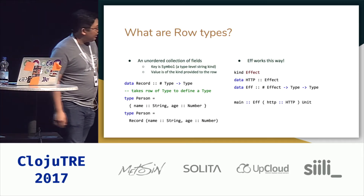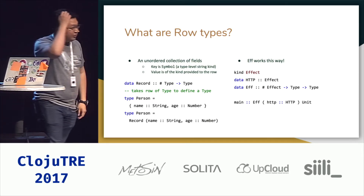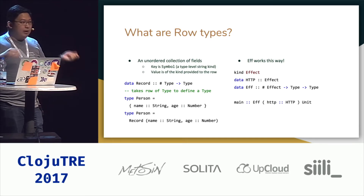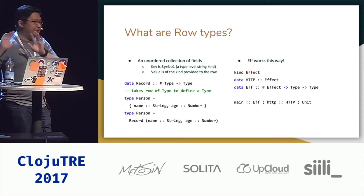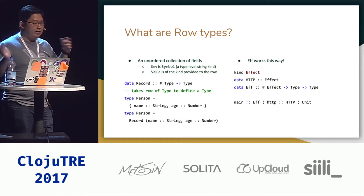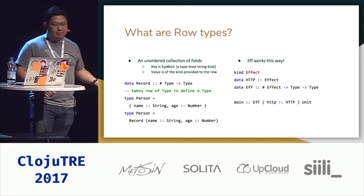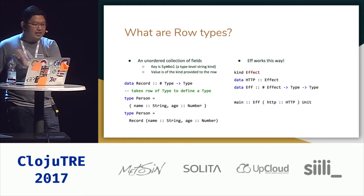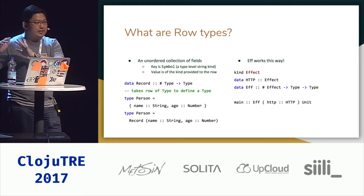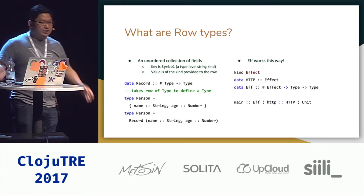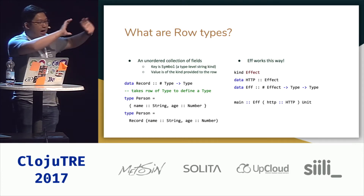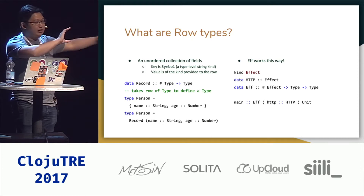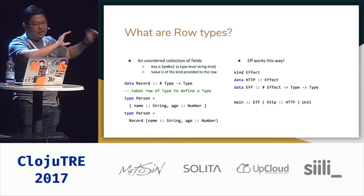If you've looked at any PureScript examples, it's the same way with Eff. Whereas in Haskell you just have IO and then your result, in PureScript we use a phantom type so that you have these kind effects and different data types for those effects. Eff works by having this phantom type parameter that holds all the effects that go on in your application, and then the result.